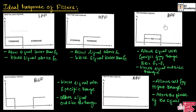This is the ideal response of a band-pass filter. This filter allows the signal with a specific frequency range. From this ideal response, we can observe that this filter will allow the frequencies between F1 and F2, and other frequencies are attenuated or blocked by the filter. The region where the range of frequencies are allowed is known as passband, and frequencies that are blocked are known as stopband. We can find the bandwidth of the filter by taking F2 minus F1, which gives the range of frequencies allowed by the band-pass filter.